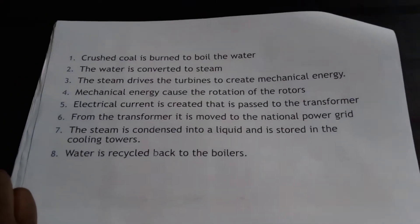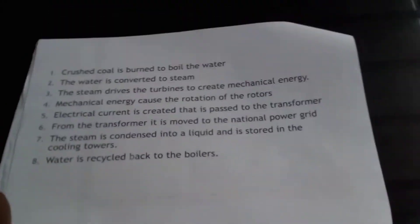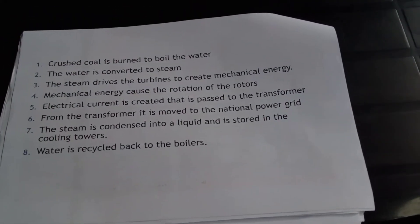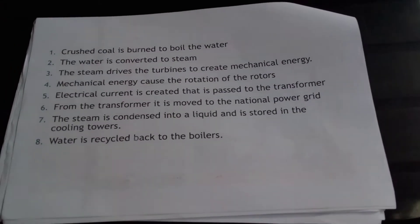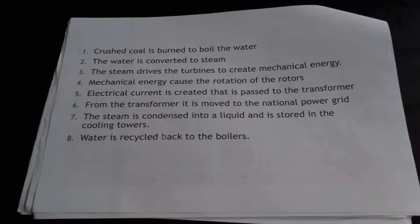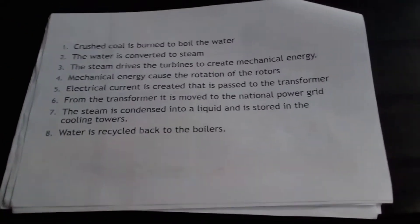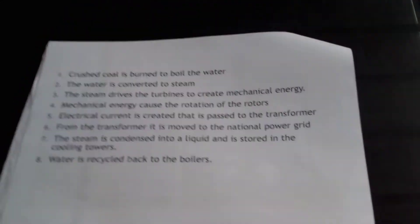What are the uses of coal? Coal is used for a variety of things. The first thing we'll mainly concentrate on is the generation of electricity. How does coal generate electricity? Coal is crushed and burnt to boil water. When water is boiled it becomes steam, and it is the steam that drives the turbines to create mechanical energy.